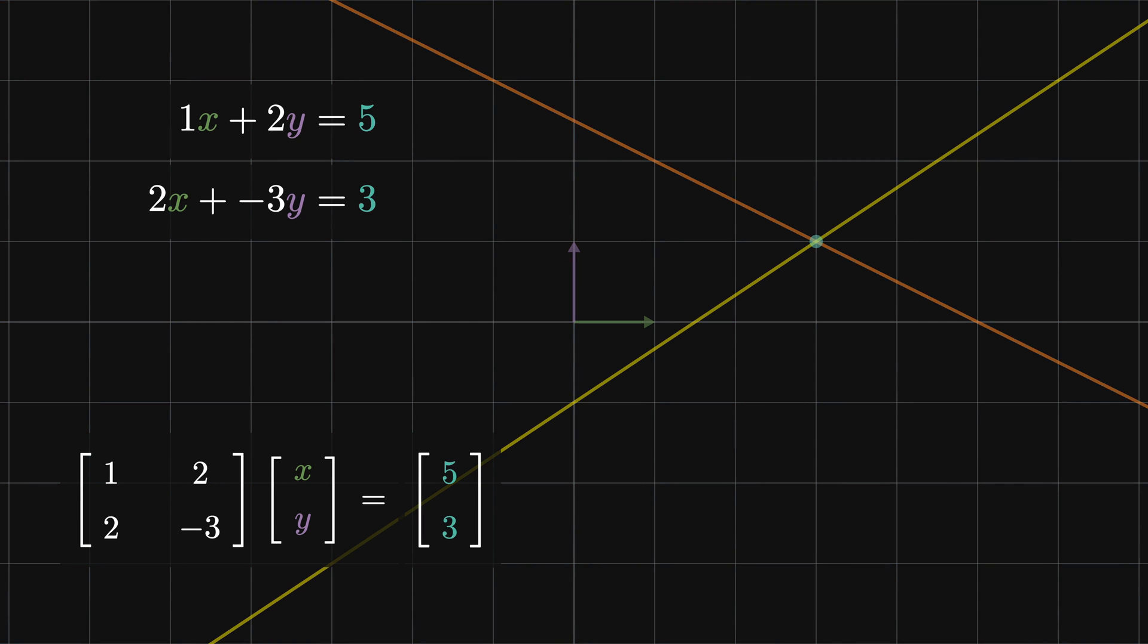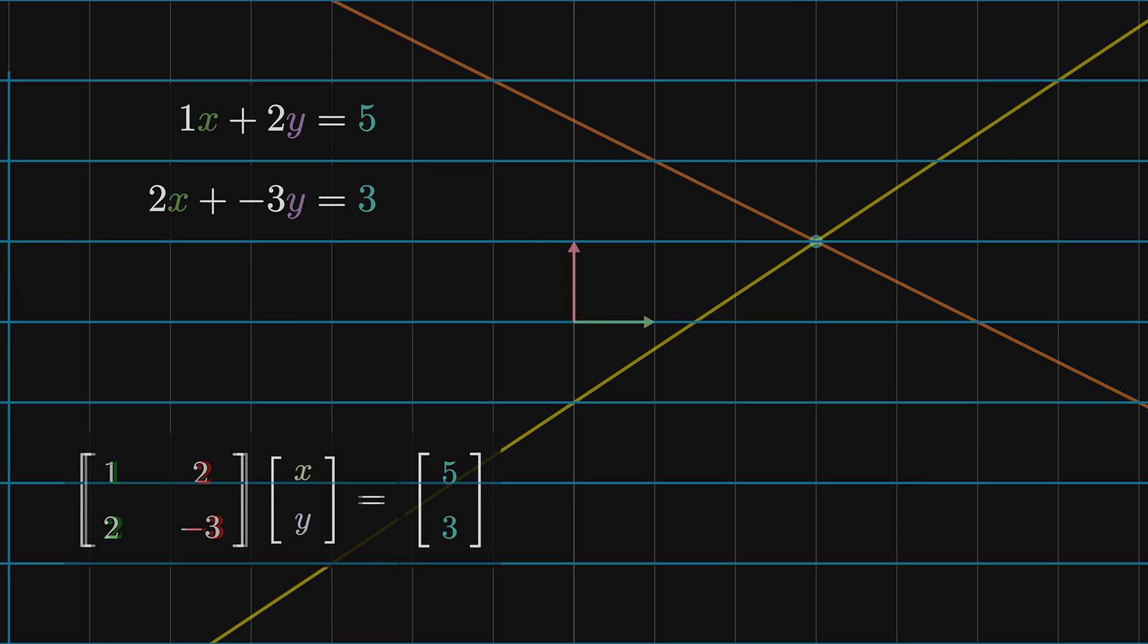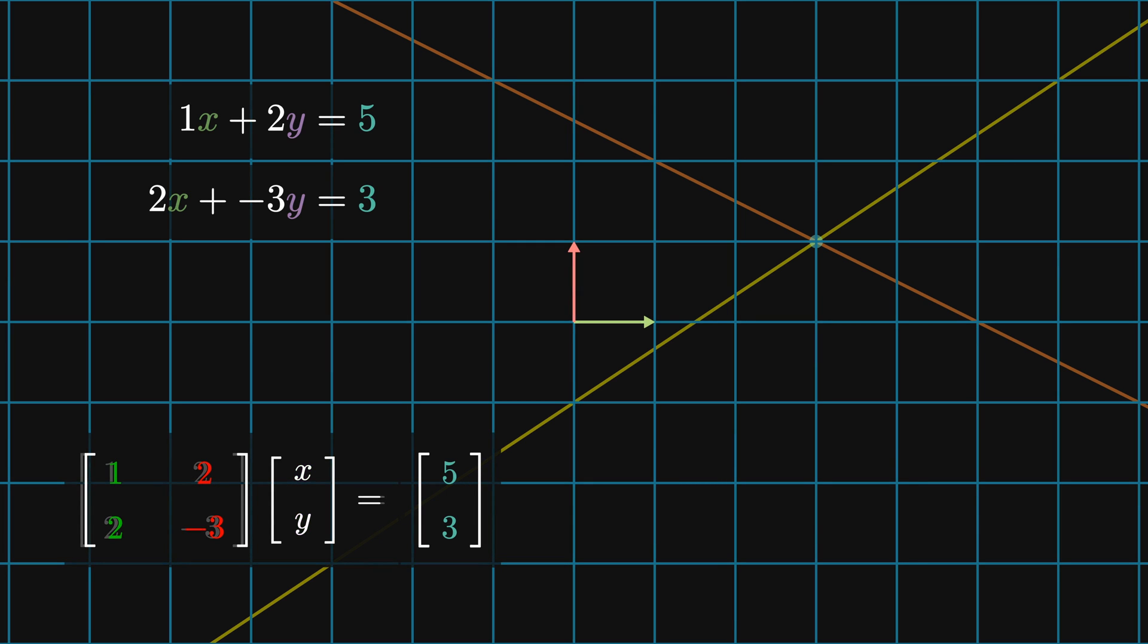If you aren't familiar with the idea of linear transformations, there's a great video by 3Blue1Brown I'll link to below. Let's start with this coordinate system. This is in the basis of the matrix of coefficients. Here, the x and y vectors from the system of equations are given by the column vectors x equals [1, 2] and y equals [2, -3].